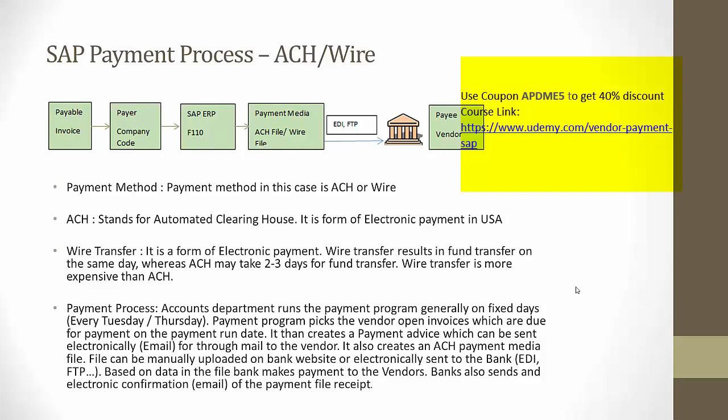For ACH or wire transfer, we receive the vendor invoice and enter it in the SAP system. We then run the F110 payment program, which produces a list of vendor invoices due for payment along with the amount. Once the invoice amounts are approved, the payment program produces an electronic fund transfer file. This file could be a flat file, XML file, or some other specified format — generally it is a flat file.